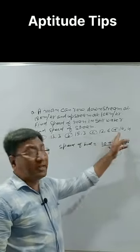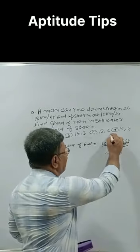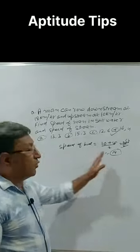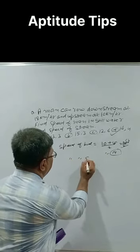In the options, only one option has 14 given. So our correct answer is 14 and 4. Speed of boat is 14 and speed of stream will be how much?